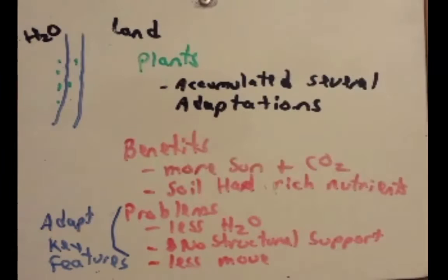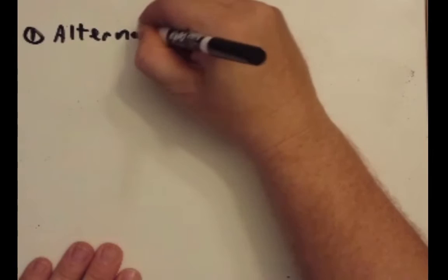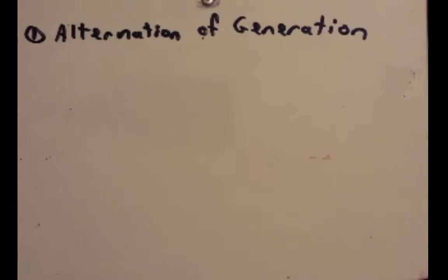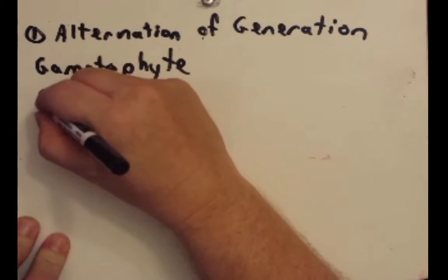The first one we want to talk about is this thing called alternation of generations. And they alternate between two structures called the gametophytes and the sporophytes. I'm going to just give the definitions of these, really short definitions of these, and then I'm going to explain the role by drawing a figure for you. So gametophyte, and then a sporophyte.